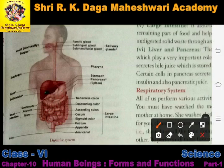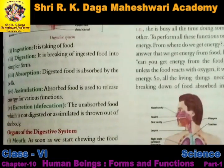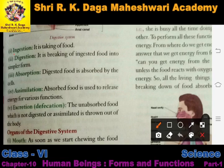In this digestive system, each organ has a specific role and function. The first process is ingestion - it means the taking in of food. When we take food into our body, that process is called ingestion.